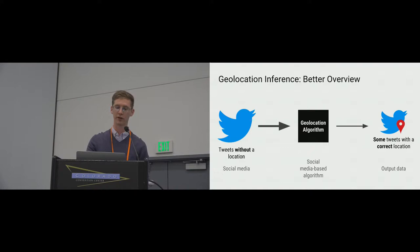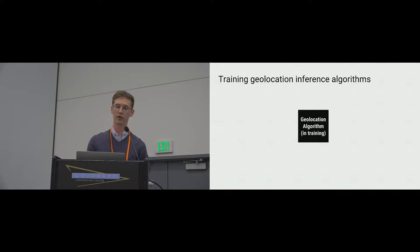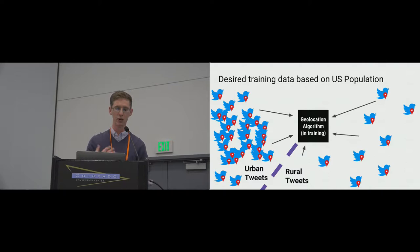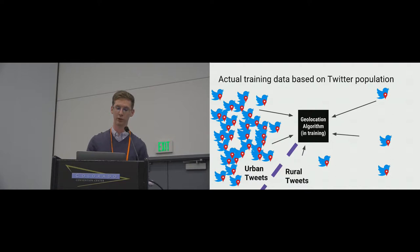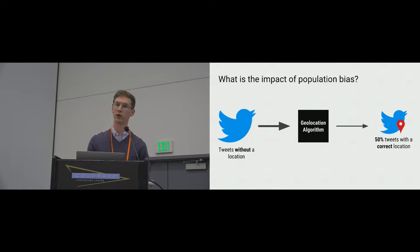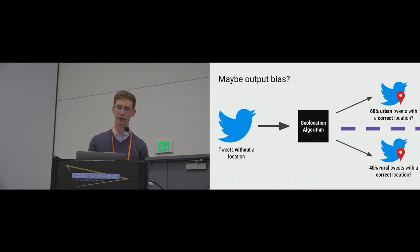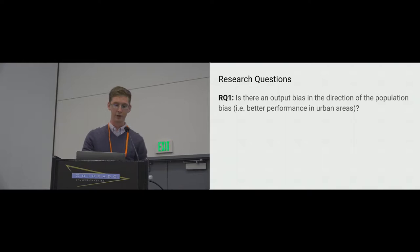That would be fine — it's true of almost any algorithm that it's not perfect. But the concern is that when we think about how this algorithm is trained to predict the location of a tweet, you get a much more skewed distribution with even more urban tweets than rural tweets than you would expect. So instead of the algorithm being equally accurate for everyone, you might see that the algorithm performs better for urban tweets than it does for rural tweets. And this would be output bias.